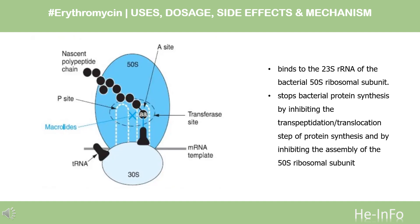Mechanism of Action: In order to replicate, bacteria require a specific process of protein synthesis enabled by ribosomal proteins. Erythromycin acts by inhibition of protein synthesis, by binding to the 23S ribosomal RNA molecule in the 50S subunit of ribosomes in simple bacterial organisms. It stops bacterial protein synthesis by inhibiting the transpeptidation/translocation step of protein synthesis, and by inhibiting the assembly of the 50S ribosomal subunit. This results in the control of various bacterial infections.